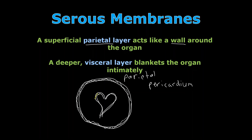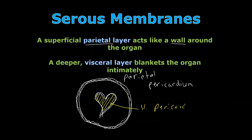The second layer is the visceral layer. To find the visceral layer, go to the organ itself. There's a blanket of this double serous membrane that intimately touches the organ — like laying on top of the heart. This is the visceral pericardium. For the lungs it would be the visceral pleura, and for the intestines, the visceral peritoneum that intimately touches it.